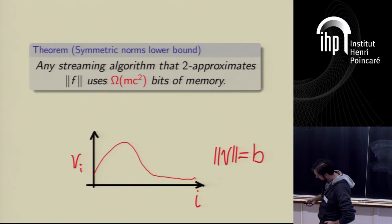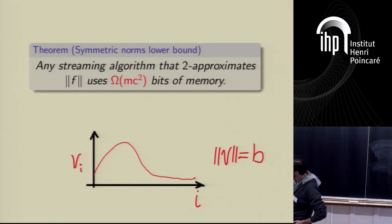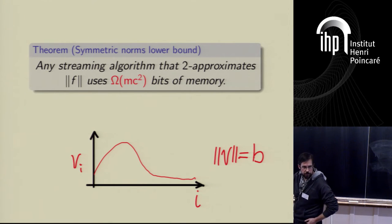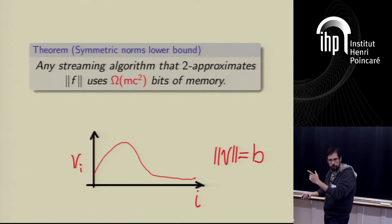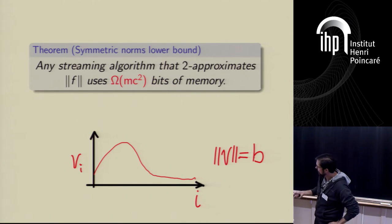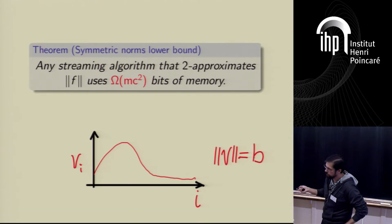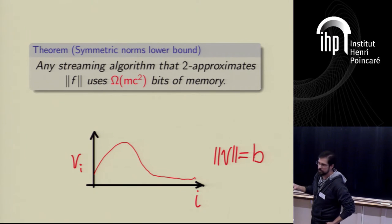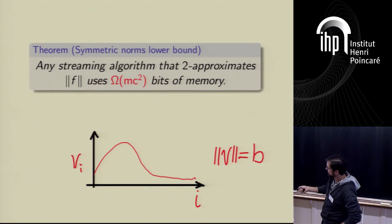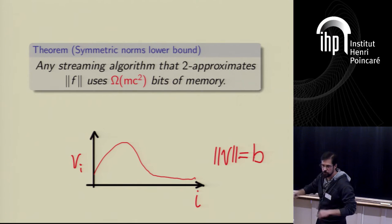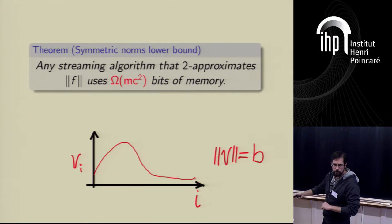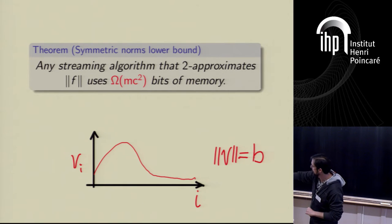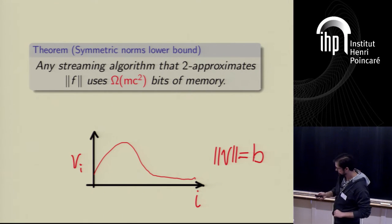So I want to prove that if we can get a 2-approximation for the norm, we use at least mc^2 bits of memory. I choose a vector v which attains the maximum of the norm over the L2 unit ball. Because the norm is symmetric, I can reorder coordinates and assume they're all positive. I'll draw the vector as if you plotted it — coordinate values on the y-axis and coordinate index on the x-axis.